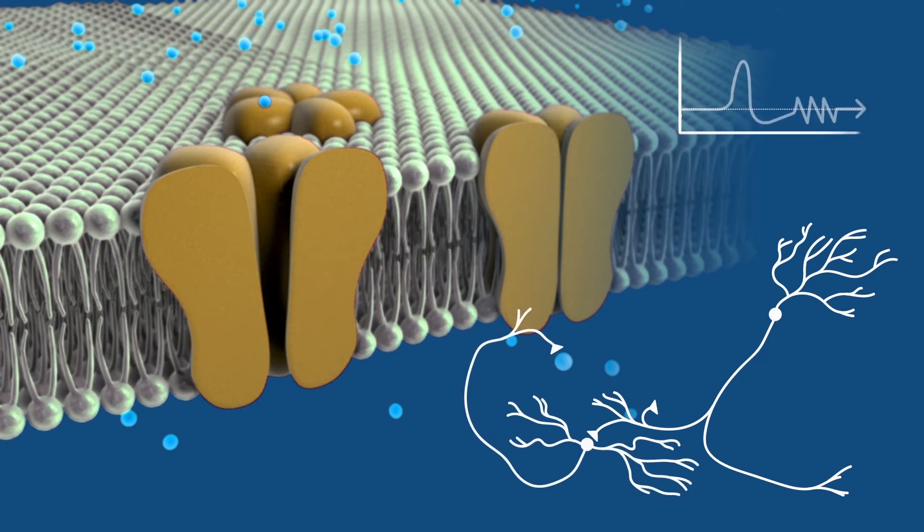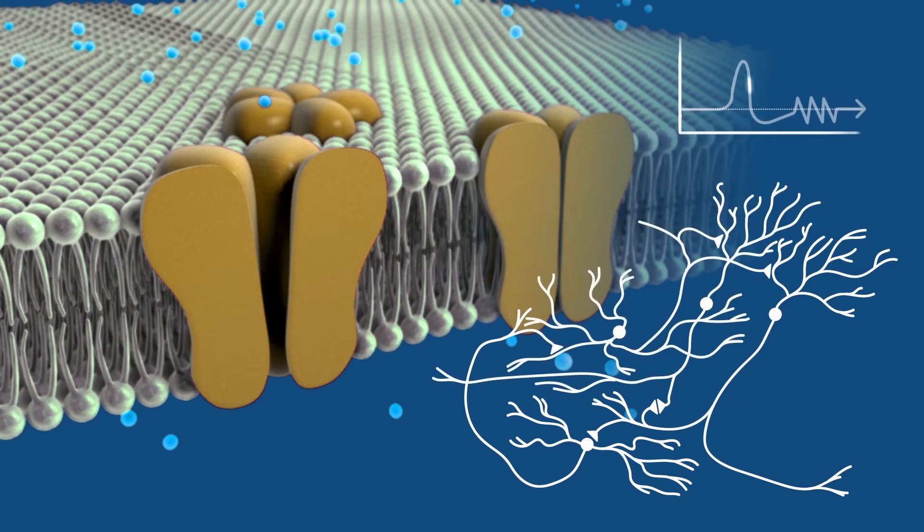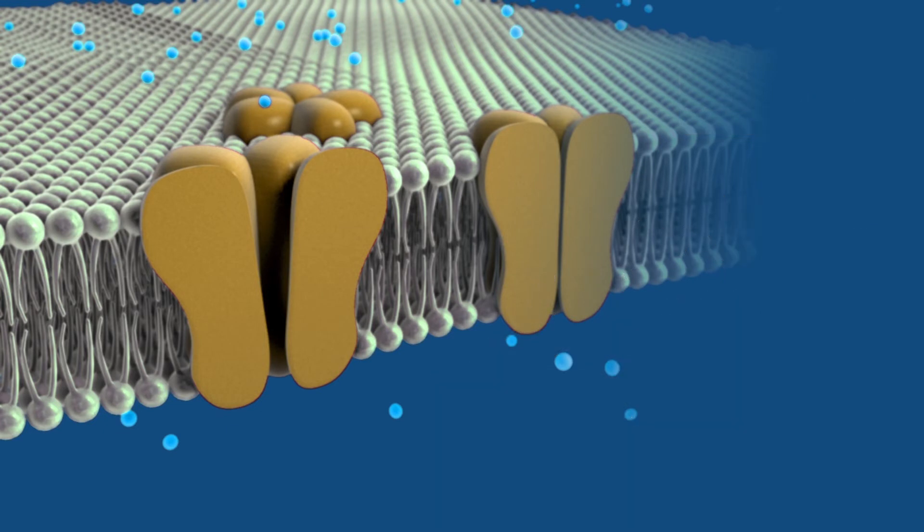But the real question was, could light trigger channel rhodopsins to open and allow the flow of charged ions? And the answer to this question proved a pivotal advance in the way we study the brain.